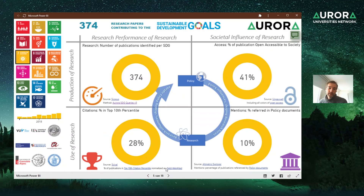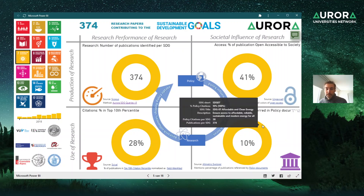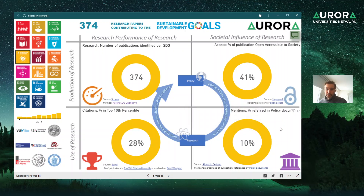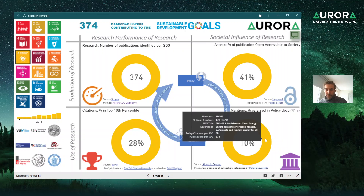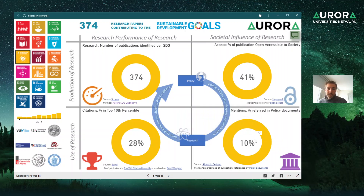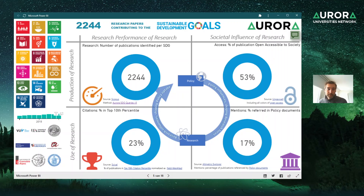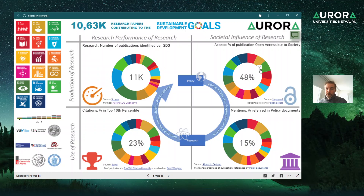Explanations are available on the links below. Under societal influence, 41% of these publications are freely available and open access for everyone to read. You can click the links to read more about that. Also, 10% of those papers are mentioned in policy documents — this differs for each SDG. Clicking on a circle shows the average number for each SDG.